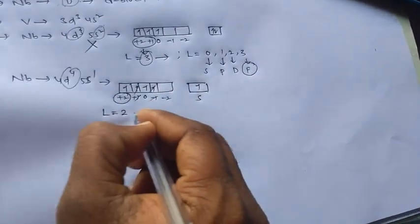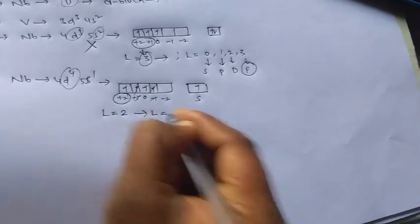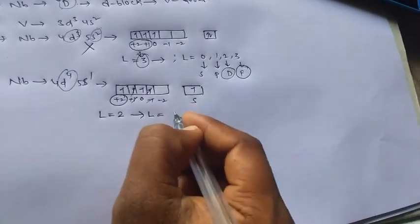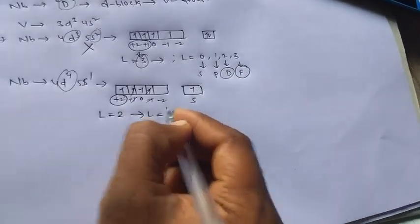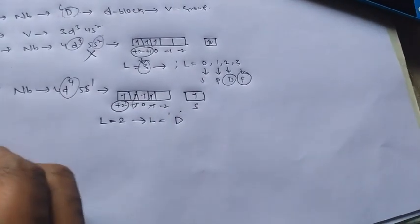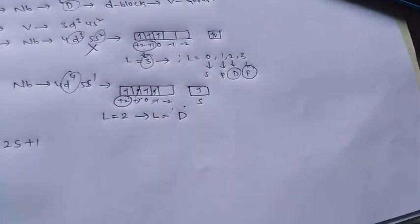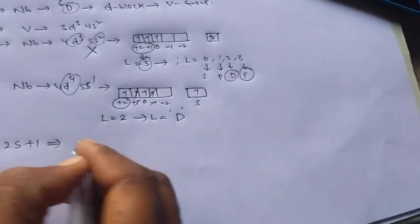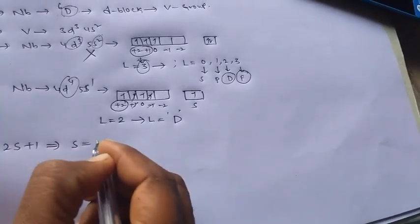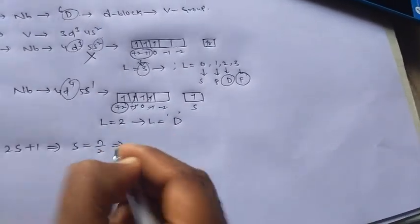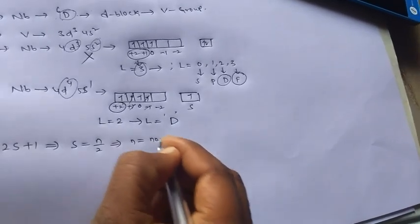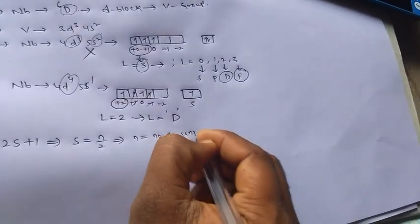So if L is equal to 2, we know that, what is that? D. So we have term symbol D here. Now we need to check, is it satisfying 2S plus 1 or not? Here, to calculate S, S is equal to n by 2. And here n is equal to number of unpaired electrons.